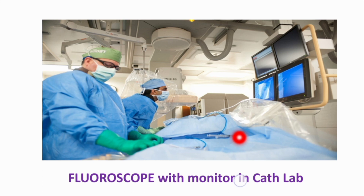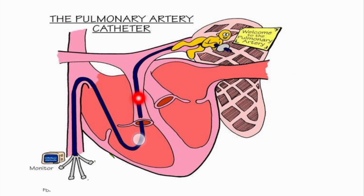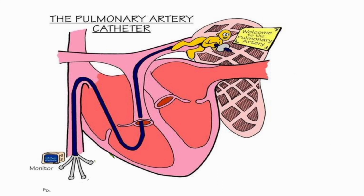In the modern cath lab, a fluoroscope with a monitor is used. The catheter is inserted from the forearm vein, enters the inferior vena cava, then the right atrium, then the right ventricle, and finally reaches the pulmonary artery. In the pulmonary artery there is pure venous blood, and its oxygen concentration is measured. Once we have this value, we can put it into the equation to calculate cardiac output.